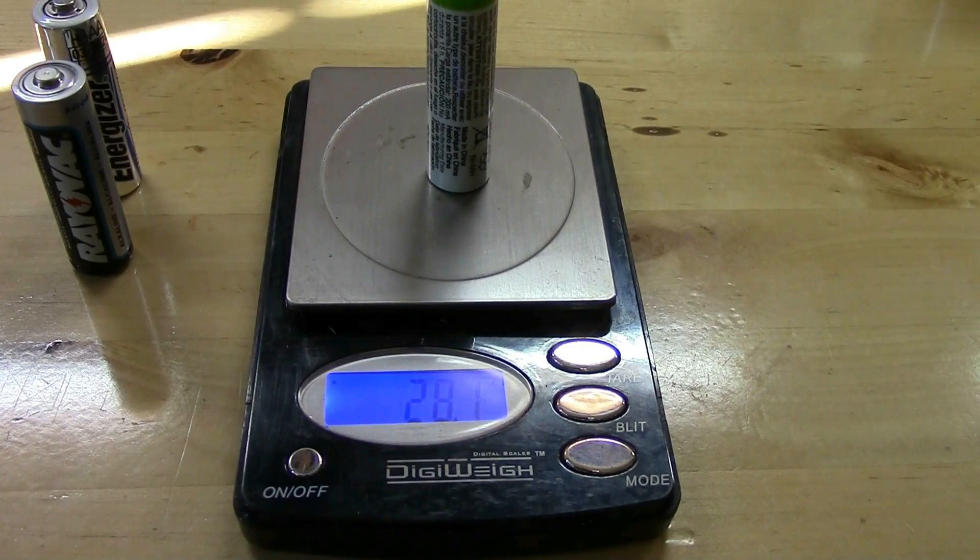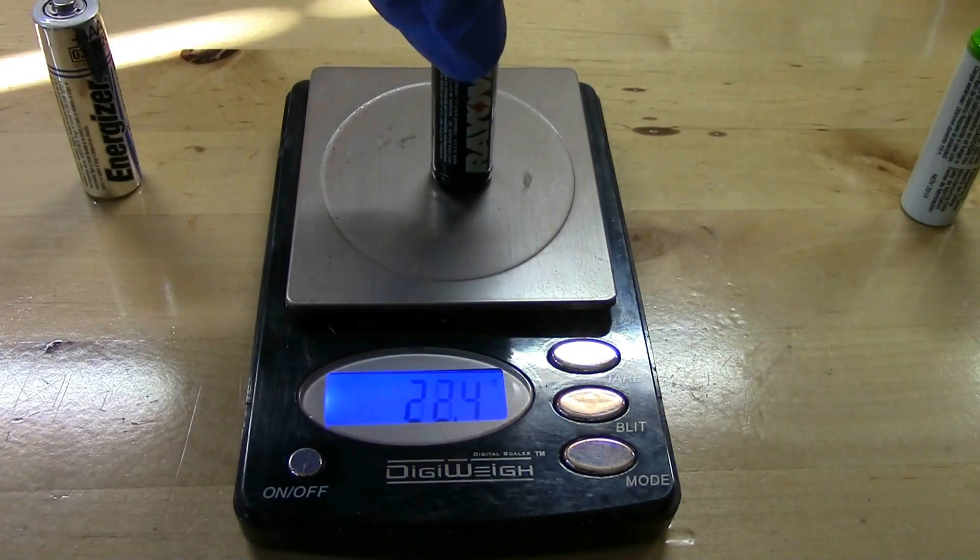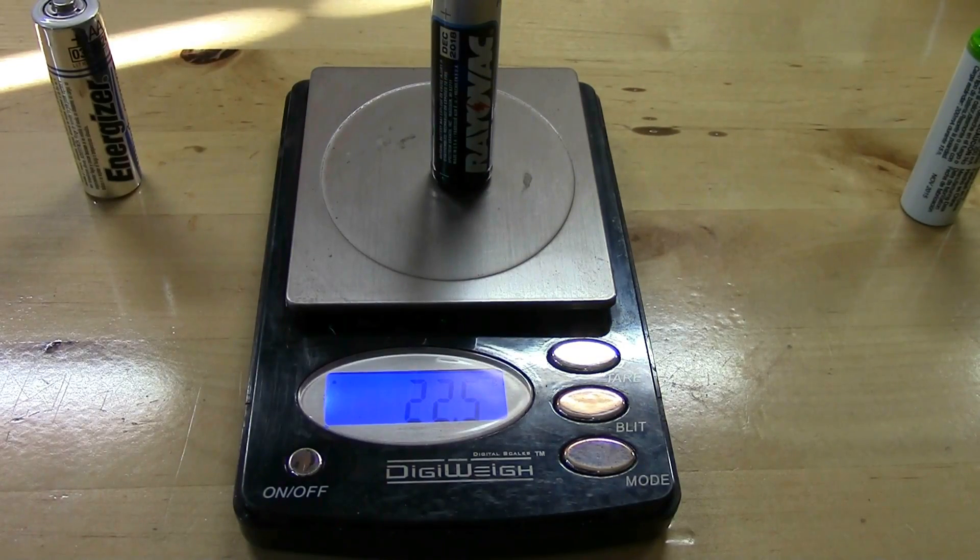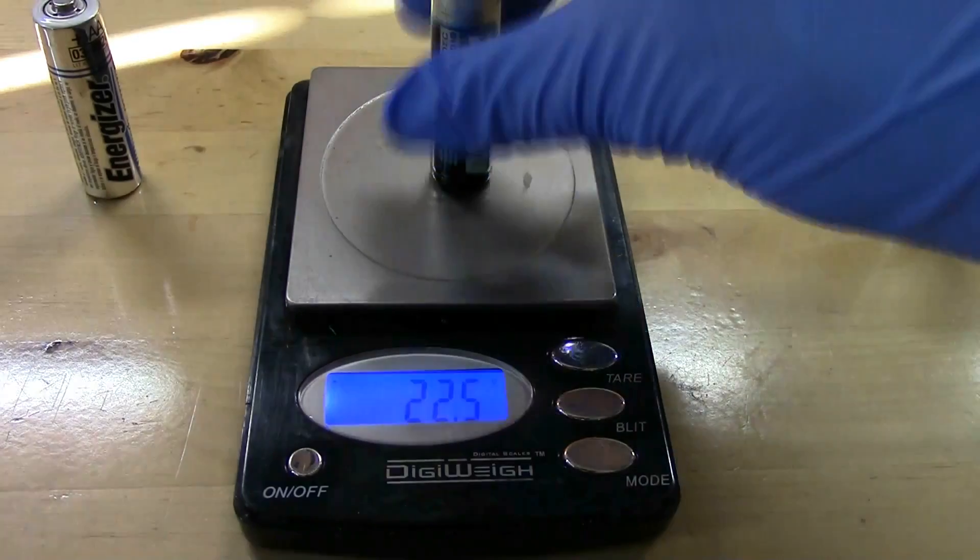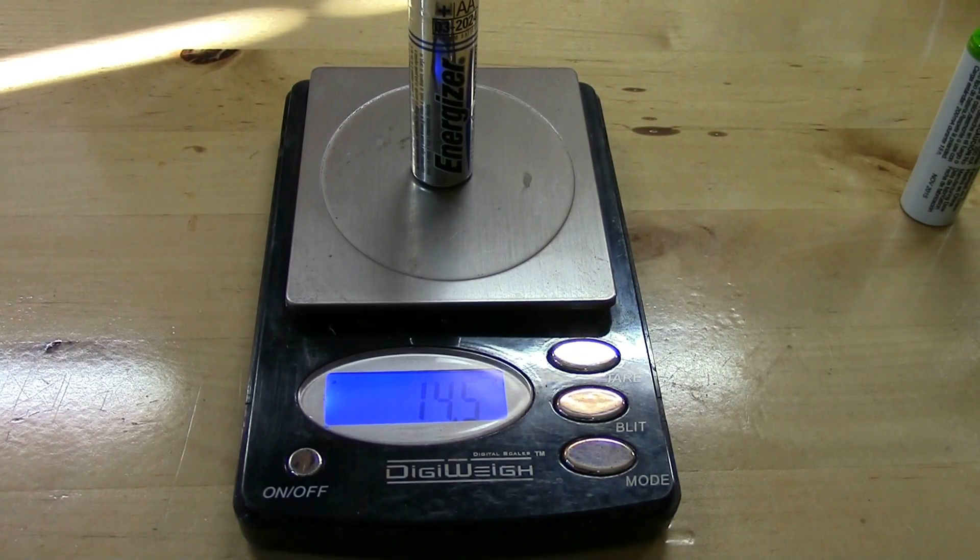28.1 grams for that one. Standard alkaline, 22.5 grams. And now the Energizer Ultimate Lithium is down at 14.5. So you see because it uses lithium metal, lithium is so lightweight makes the battery lightweight and so it's got a very high energy density.